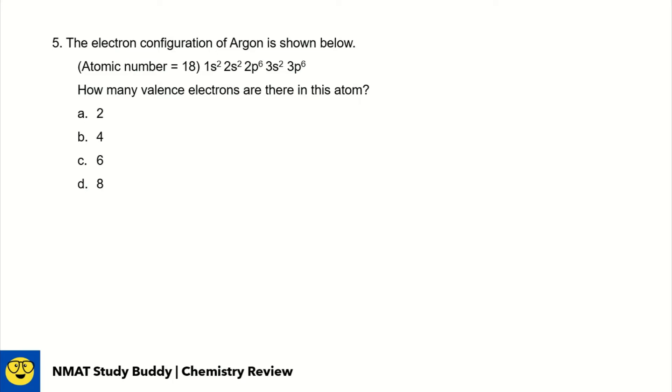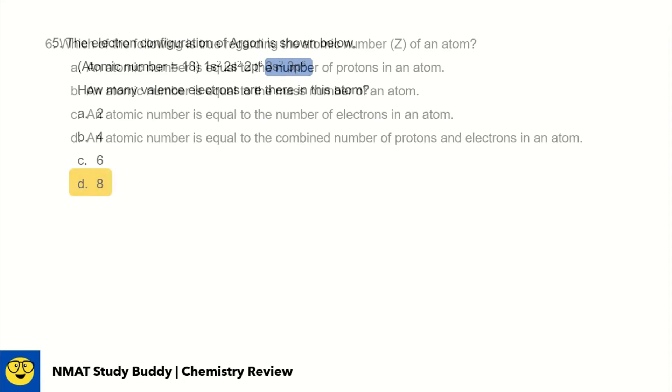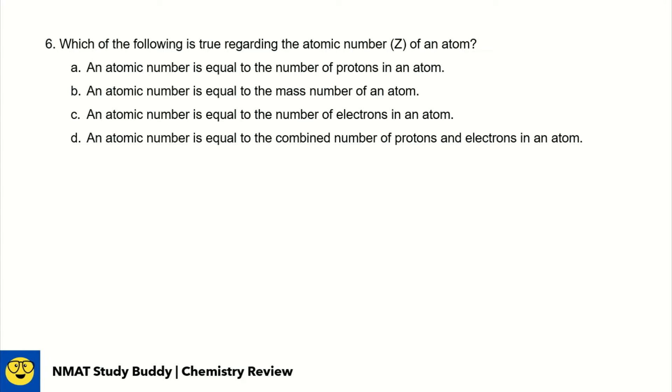For iron 3 plus with a net charge of positive 3, we need to remove 3 electrons. To remove electrons, we first remove the 4s2, then one electron from 3d. This leaves us with 1s2, 2s2, 2p6, 3s2, 3p6, 3d5, which is letter C. Number 5, the electron configuration of argon is shown below. How many valence electrons? Valence electrons are the electrons in the highest energy level orbitals. The highest energy level is 3, which contains 3s with 2 electrons and 3p with 6 electrons, totaling 8 valence electrons.